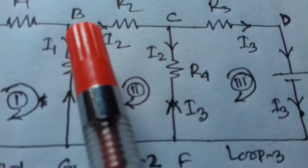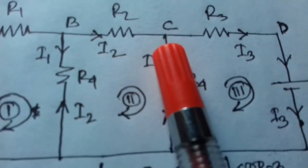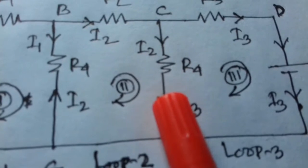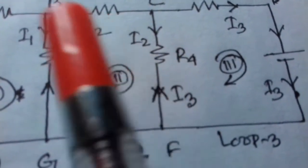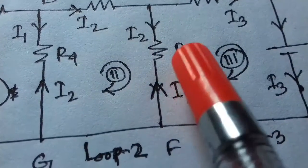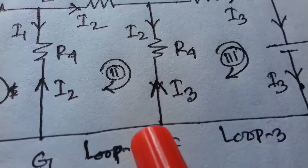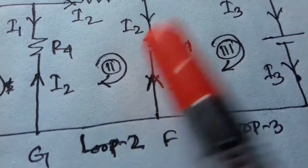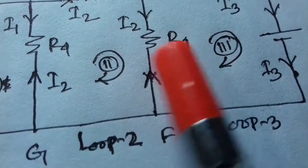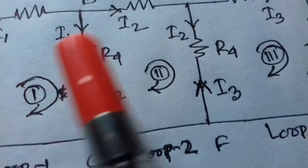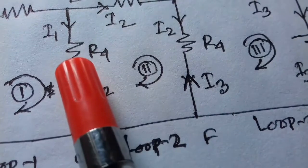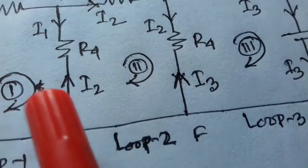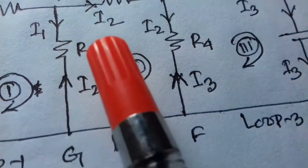For loop 2, we start with minus i2 R2, minus — we will use this loop. This loop current is I2, and the resistance is R4. The current through R4 is (i2 minus i3), so we write minus (i2 minus i3) into R4. Then minus (i2 minus i1) into R4.